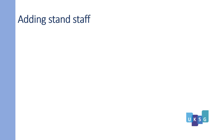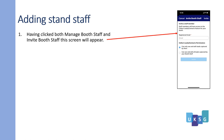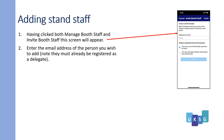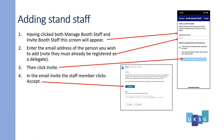Adding stand staff to the Passport game. Having clicked on Manage booth staff and Invite booth staff, this screen will appear. Enter the email address of the person you wish to add — note they must already be registered as a delegate — then click Invite. In the email invite, the staff member clicks Accept. They are now eligible to scan QR codes for the Passport game for your stand.